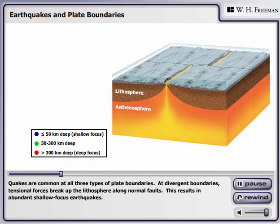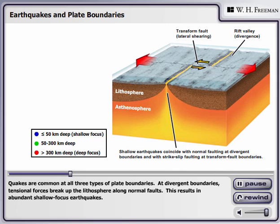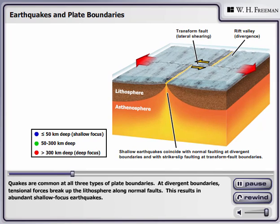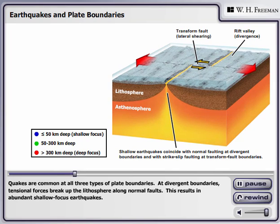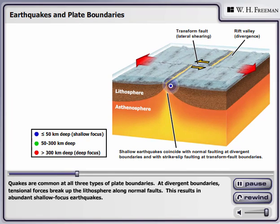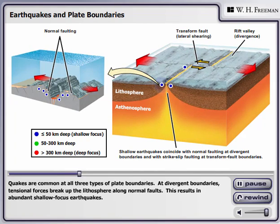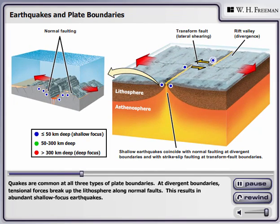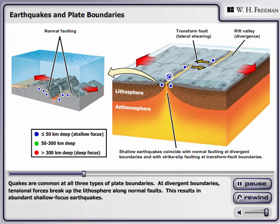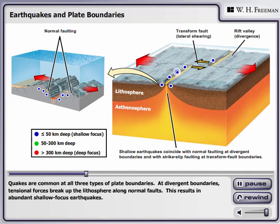Quakes are common at all three types of plate boundaries. At divergent boundaries, tensional forces break up the lithosphere along normal faults. This results in abundant shallow focus earthquakes.